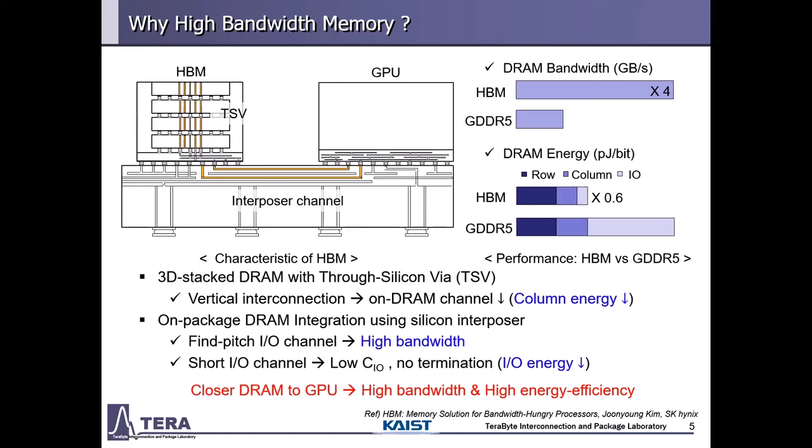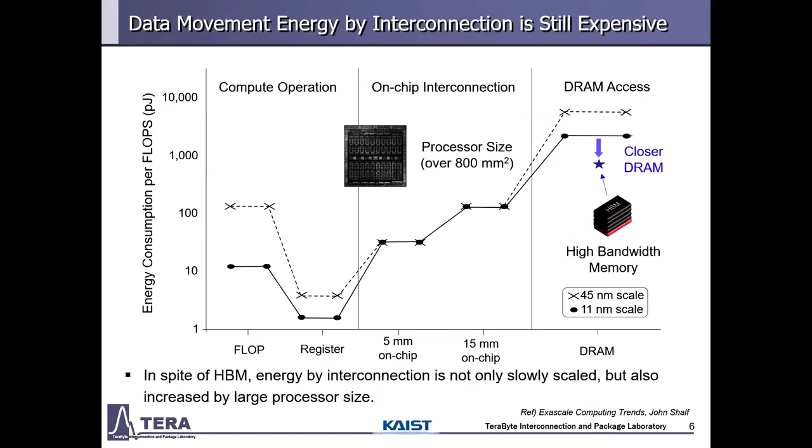This graph compares HBM and GDDR5. HBM not only provides equivalent data bandwidth to GDDR5, but also reduces energy consumption by 40% by placing DRAM closer to the GPU. However, in spite of this advanced memory, data movement energy still remains a significant problem.